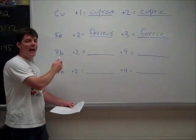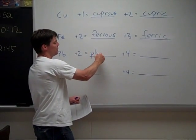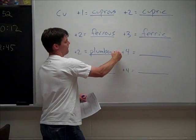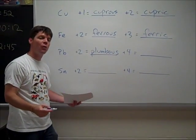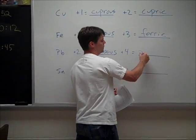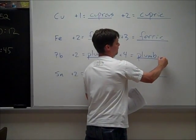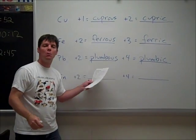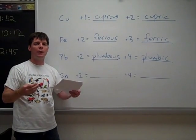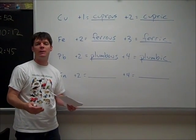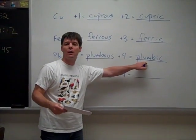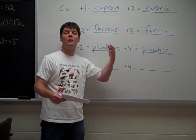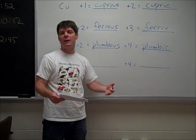For lead, plus two is plumbous. The lead plus four ion is plumbic. Plumbous chloride would also be called lead two chloride, that would be PbCl2. Plumbic chloride is also lead four chloride, that would be PbCl4.